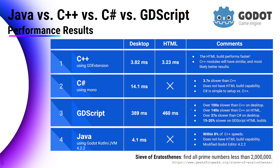Before I go into the details, how fast is Java with Godot? One of my subscribers asked me to compare it with Java speeds. Using the same algorithm — finding prime numbers less than two million — Java is within five to eight percent of C++ speeds. Just slightly slower than C++, but incredibly fast. It actually dips below four milliseconds the longer I run the test.